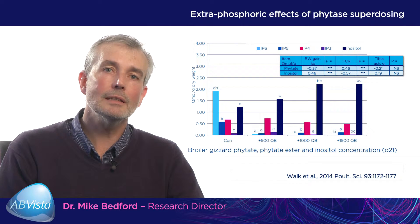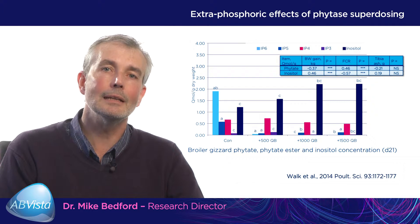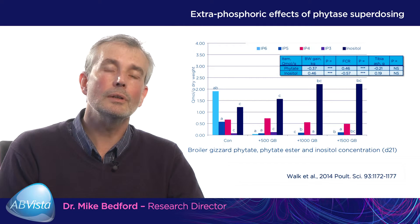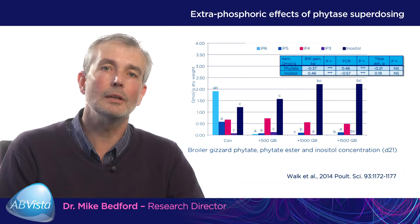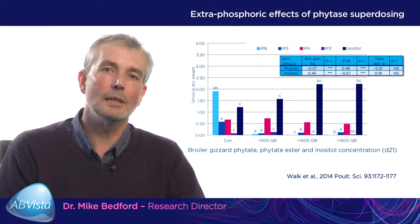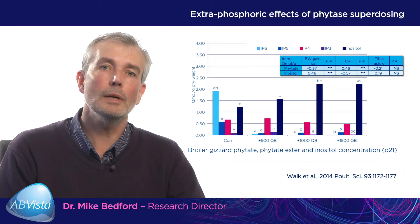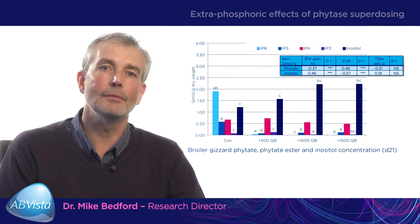You can see the more phytase that is fed, the higher the level of inositol generated in the gizzard. So there clearly is inositol provision when we use a phytase. Looking at the table associated with this graph, you can see a very highly positive correlation between the concentration of inositol found in the gizzard and the performance of the animal as measured by gain or FCR. So it's suggesting the more inositol we generate, the better the FCR and the better the gain of the animal.